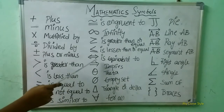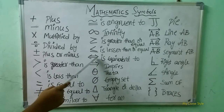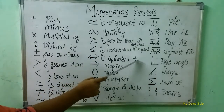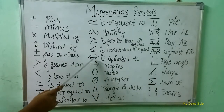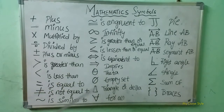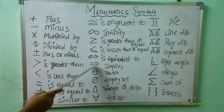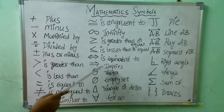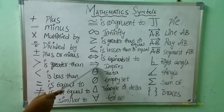Here what is this symbol? This symbol is called equivalent to symbol. Next, what is this symbol? This is an implies symbol.